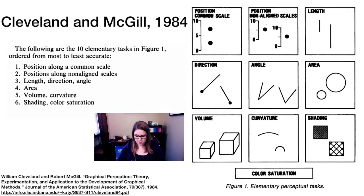So what they did is they gave people 10 elementary tasks. They asked people to make judgments about comparisons, and then they assessed how accurate people were about those judgments. If you have two objects and they are positioned along a common scale, that's probably going to be the easiest for you to tell me a comparison between these two things.